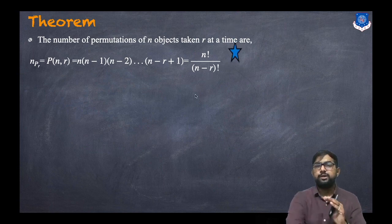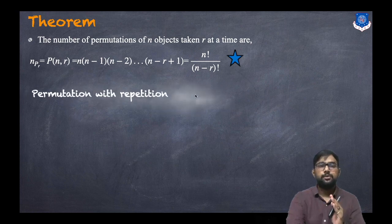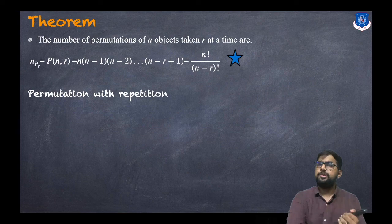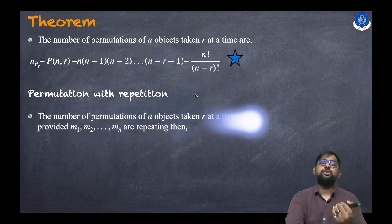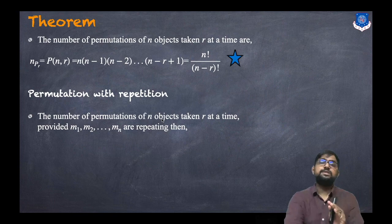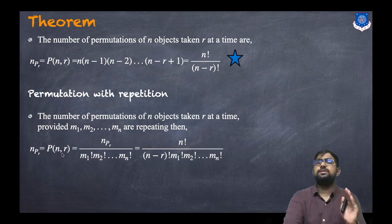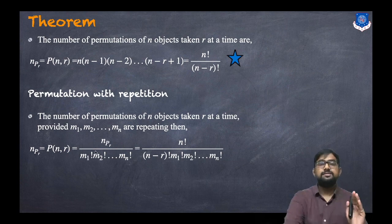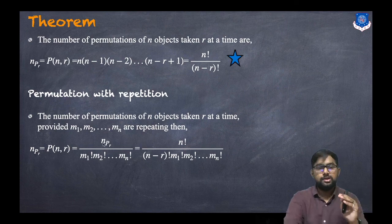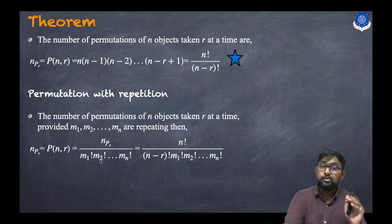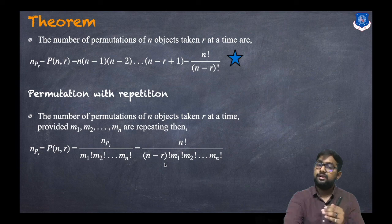For permutation with repetition: if objects are repeated with multiplicities m1, m2, ..., ml, then the number of permutations is nPr divided by m1 factorial times m2 factorial up to ml factorial, which equals n factorial divided by (n minus r) factorial times m1 factorial times m2 factorial up to mn factorial.